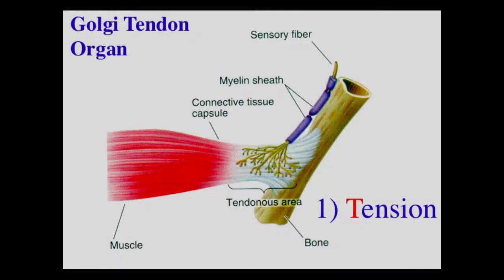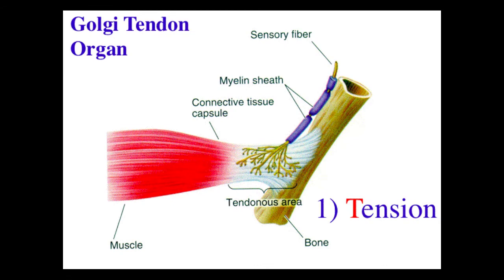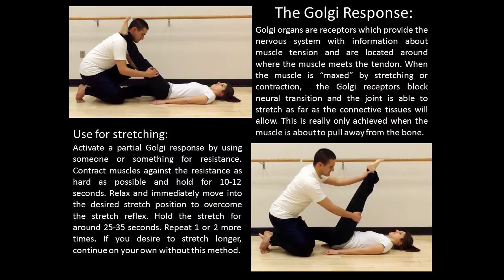Golgi organs are receptors which provide the nervous system with information about muscle tension and are located around where the muscle meets the tendon. When the muscle is maxed by stretching or contraction, the Golgi receptors block neural transmission and the joint is able to stretch as far as the connective tissues will allow. This is really only achieved when the muscle is able to pull away from the bone.